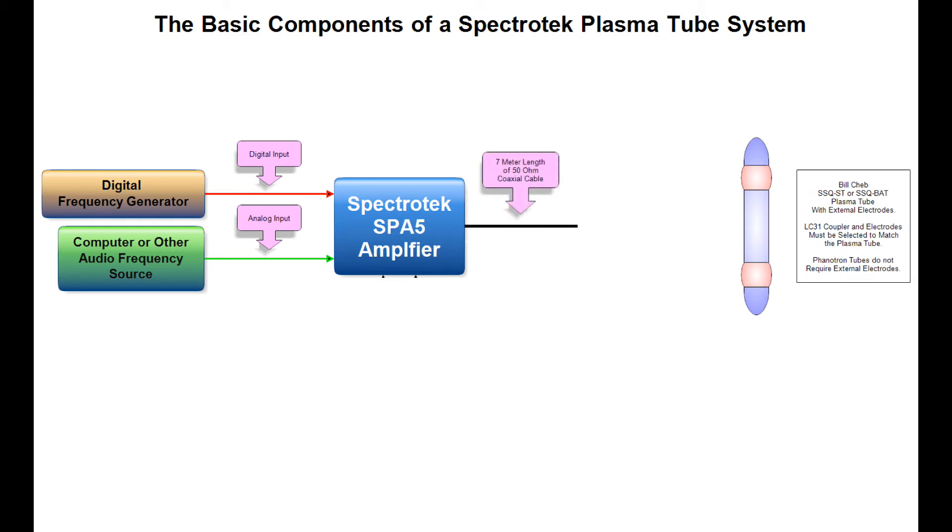The carrier wave with the desired frequencies goes from the amplifier to the plasma tube through a 7 meter length of coaxial cable.